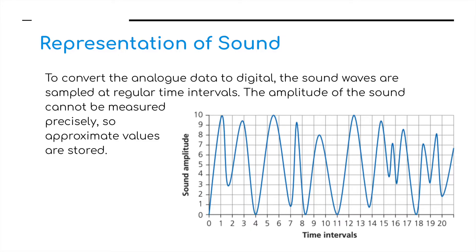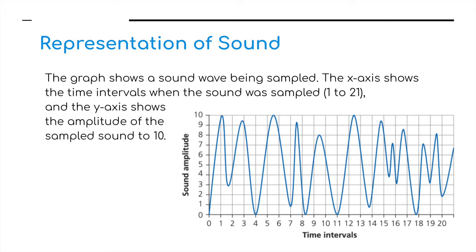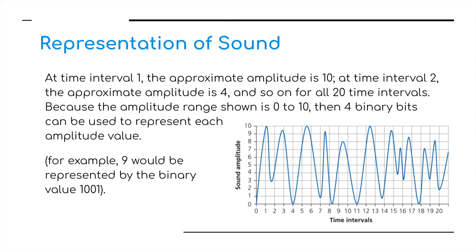To convert analog data to digital, the sound waves are sampled at regular time intervals. The amplitude of the sound cannot be measured precisely so approximate values are stored. Using this graph as an example, the x-axis shows the time intervals when the sound was sampled, in this case 1 to 21, and the y-axis shows the amplitude of the sampled sound from 0 to 10. At time interval 1 the approximate amplitude is 10, at time interval 2 it's 4, and so on across all 20 time intervals. Because the amplitude range is 0 to 10, 4-bit binary can be used to represent each amplitude value — for example 9 is represented as 1001.